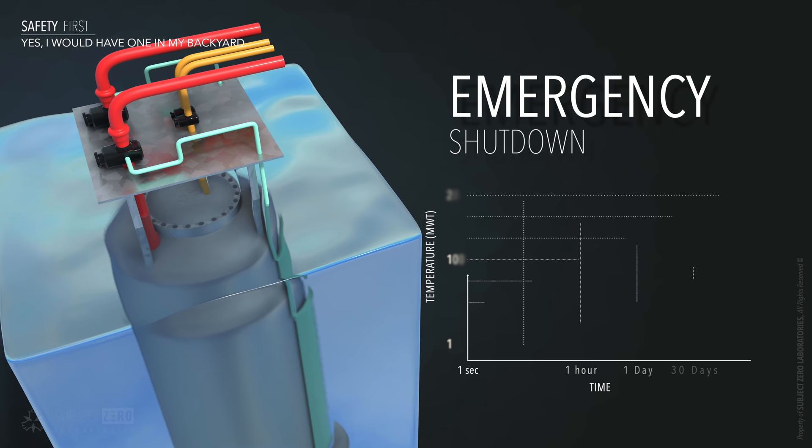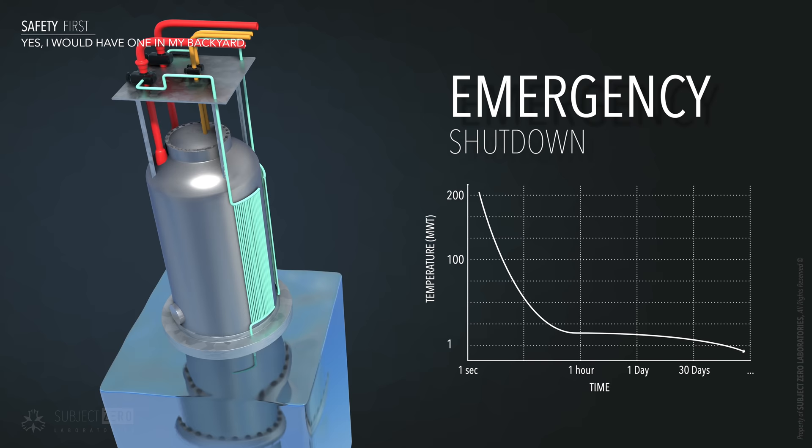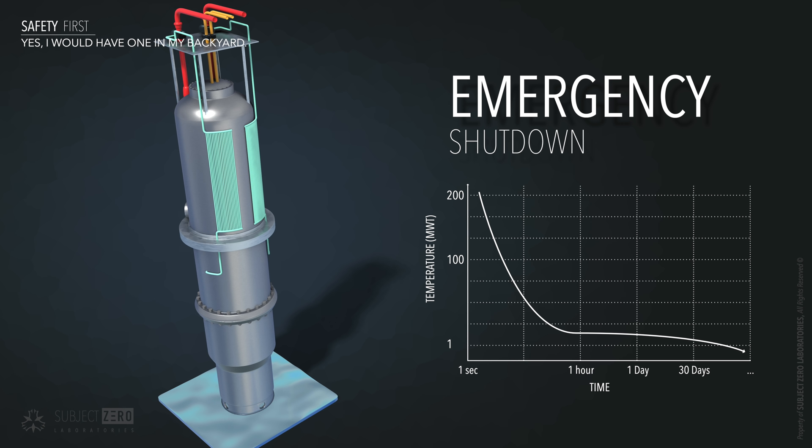In about one second, the core goes from 200 megawatt thermal to about 10. Then the heat is removed by the heat decay removal system located on the sides of the outer vessel. The HDRS was designed to exchange the remaining heat from the core with the surrounding pool.